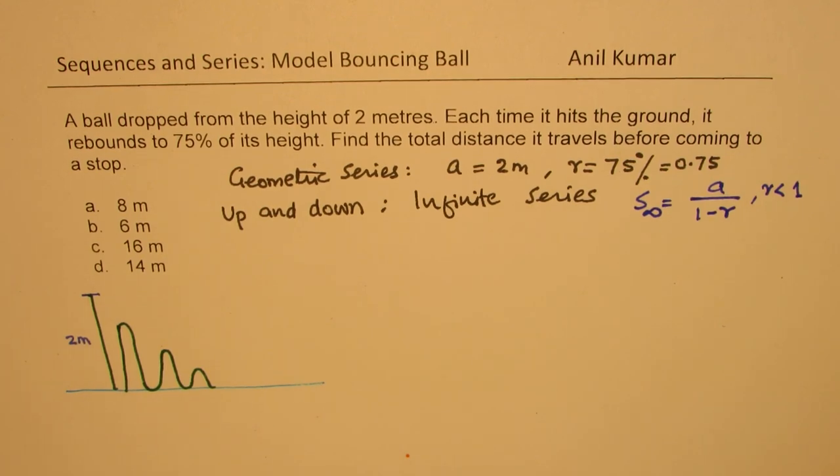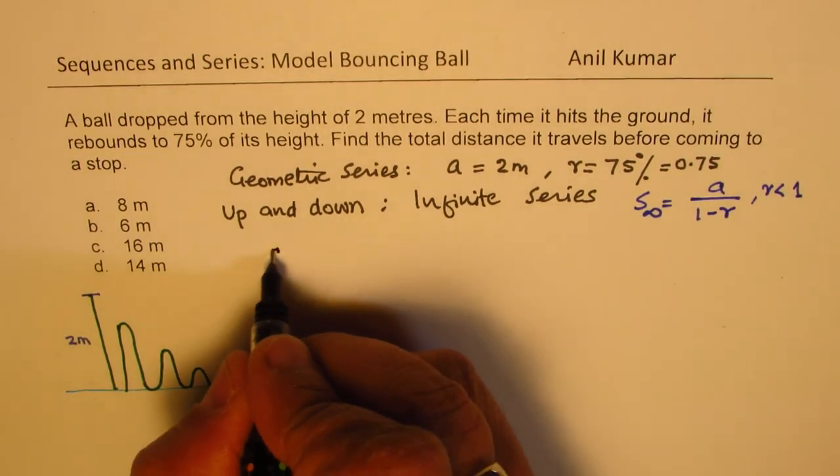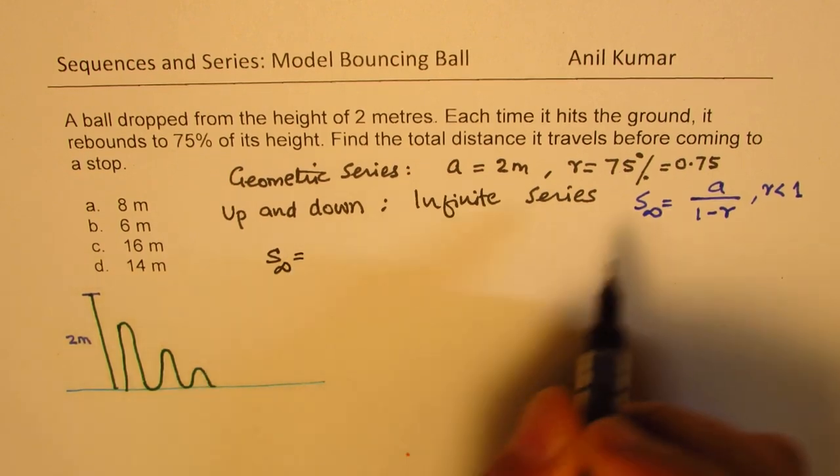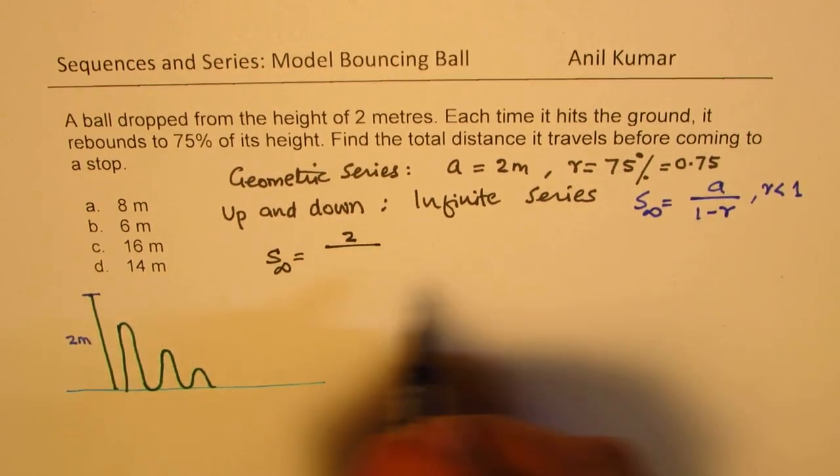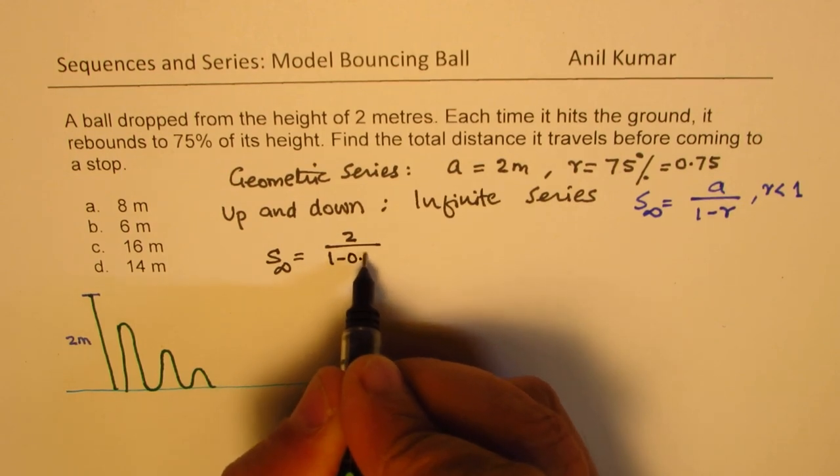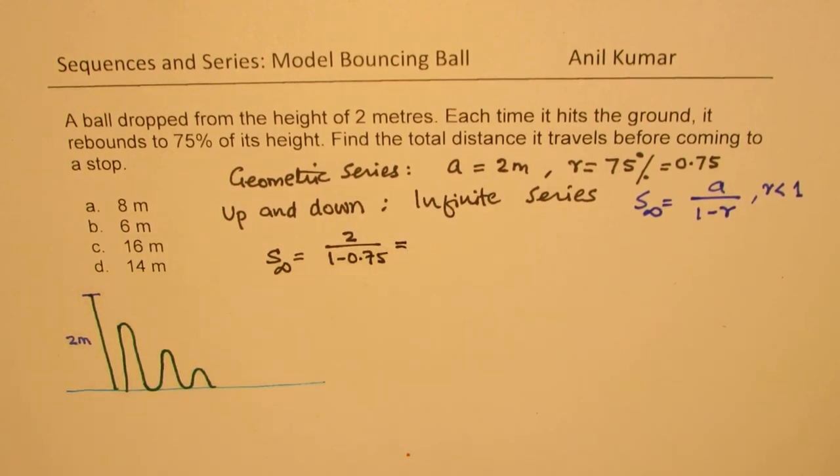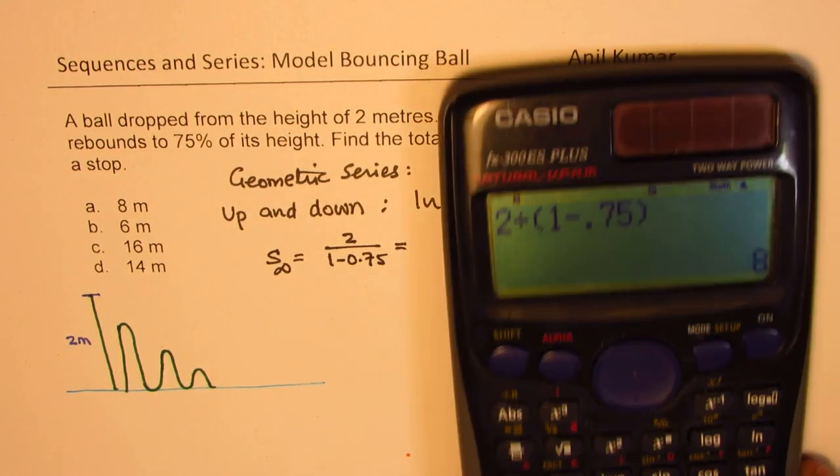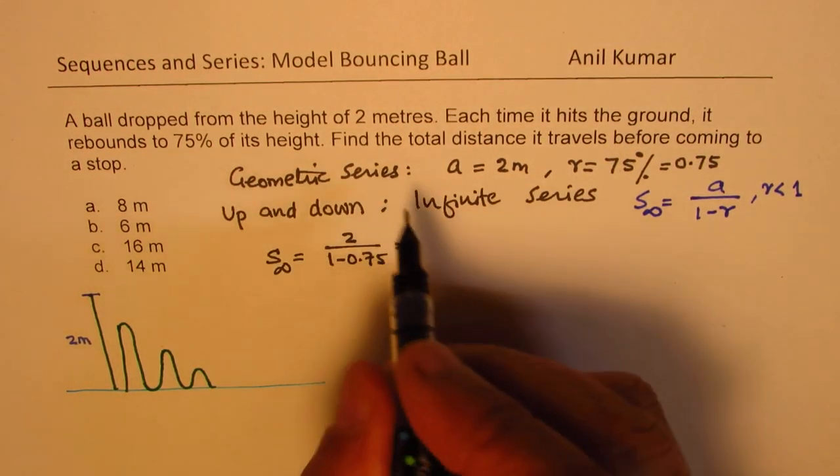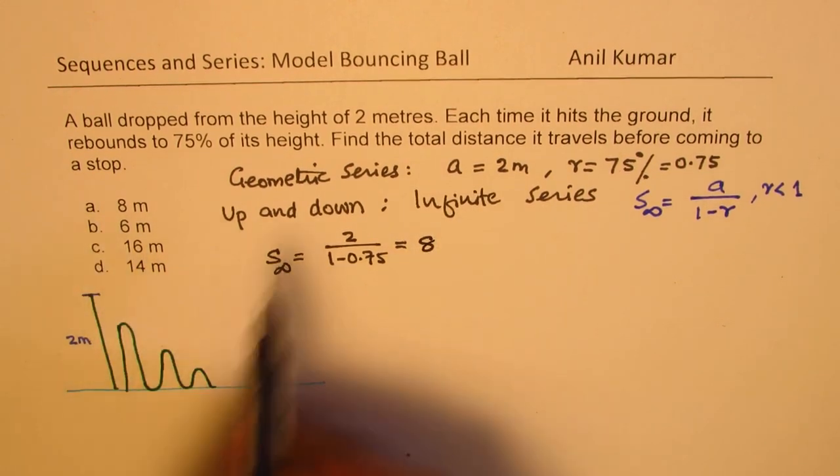So let us apply this formula and find the sum. So sum of infinite series will give us A values 2 over 1 minus 0.75. And that is equal to what? 2 divided by within brackets 1 minus 0.75, which is equal to 8. Well 8 is one of the options.